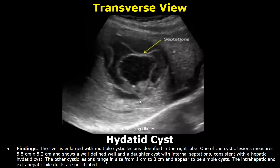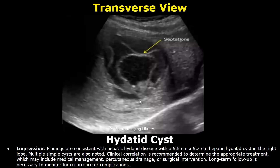If there are multiple cysts, you can write that the other cystic lesions range in size from 1 centimeter to 3 centimeters and appear to be simple cysts, and that the bile ducts are normal. In the impression, write that findings are consistent with hepatic hydatid disease with a 5.5 x 5.2 centimeter hepatic hydatid cyst in the right lobe. Finally, write that clinical correlation is recommended to determine appropriate treatment, which may include medical management, percutaneous drainage, or surgical intervention. Long-term follow-up is necessary to monitor for recurrence or complications.